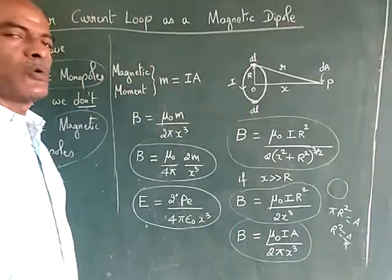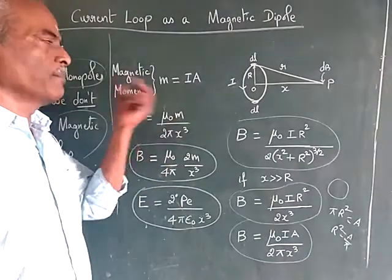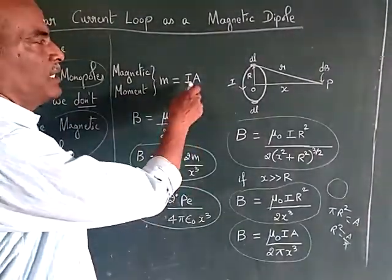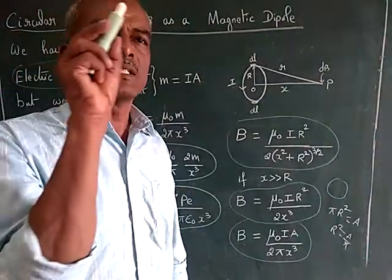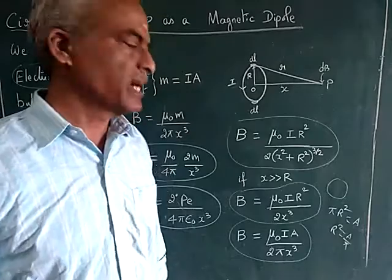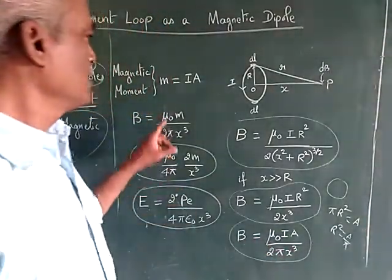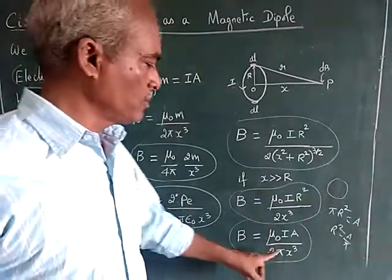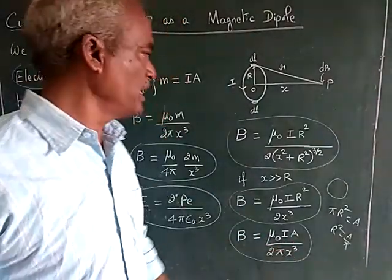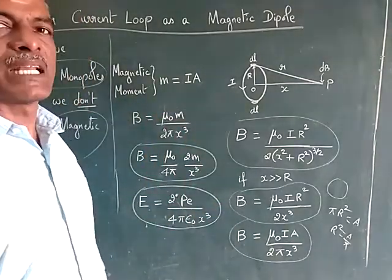Now, we are going to define a new term called magnetic moment, m, which is nothing but i into a. i is the current, a is the area of the circular loop carrying current. Therefore, we can write this equation as mu naught divided by 2 pi x cube. This i into a is replaced by m, which is nothing but magnetic moment.